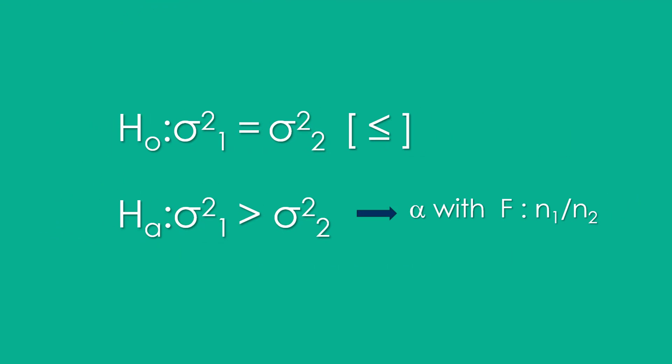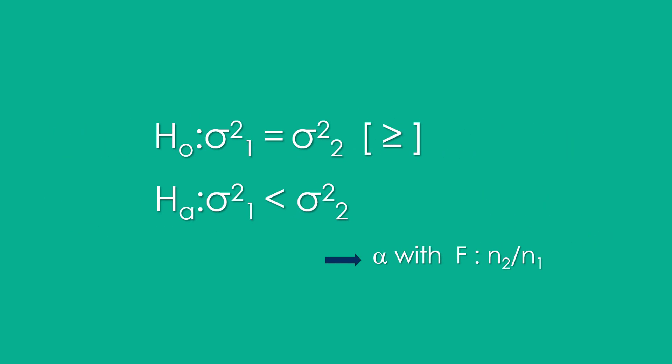If the alternative hypothesis has the greater than operator, we find F using all of alpha and the degrees of freedom of the second sample as the denominator. If the alternative math operator is less than, we assume the variance of the second sample is larger and we find F using all of alpha and the degrees of freedom of the second sample, the larger sample, as a numerator and the degrees of freedom of the first sample as a denominator.